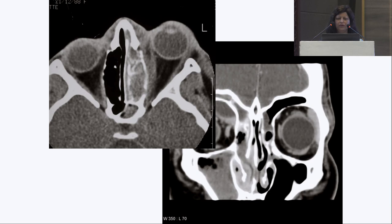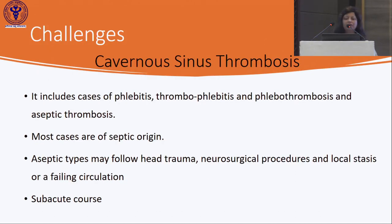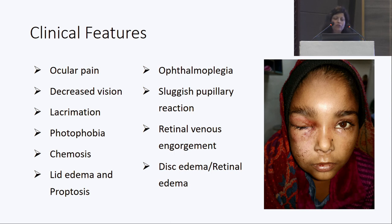According to the Garcia and Harris criteria, indications for surgical intervention in subperiosteal abscess include acute optic nerve or retinal compromise, large subperiosteal abscess, non-medial location, presence of frontal sinusitis, suspicion of anaerobic infection with emphysematous areas, infection of dental origin, evidence of chronic sinusitis, patient age 9 years or older, or recurrence after previous drainage.